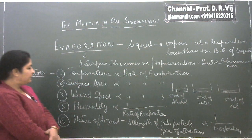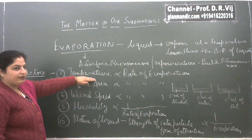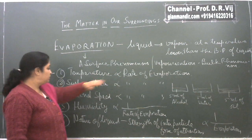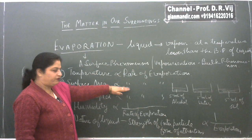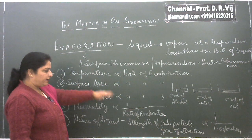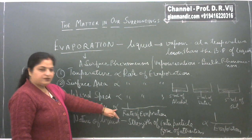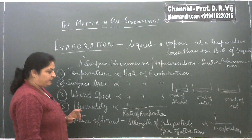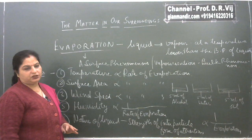So here are the factors that decide the rate of evaporation: temperature is directly proportional — higher is the temperature, higher is the rate of evaporation. Surface area is directly proportional — more surface area, more rate of evaporation. Wind speed — higher wind speed, higher rate of evaporation. More humidity means less rate of evaporation. And stronger interparticle force of attractions means lesser extent of evaporation.